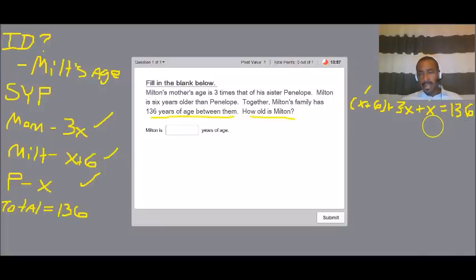So we're going to combine like terms. And so X plus 3X is 4X plus another X is 5X plus six equals 136. So all I did was add the X's and then leave the six because it doesn't have any like terms.